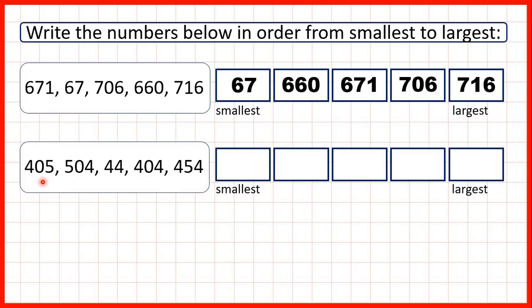Now we have 405, 504, 44, 404, 454. So again 44 is only a two-digit number, so it doesn't have a hundreds digit. But all of our other numbers are three-digit numbers, so our smallest number is 44.